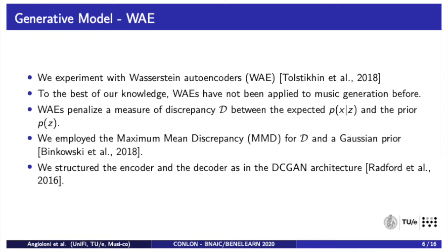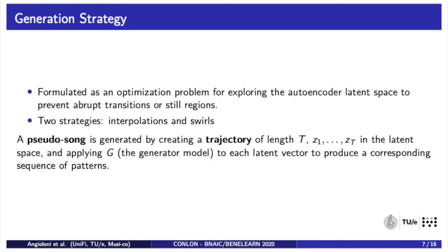Our generation strategy is formulated as an optimization problem for exploring the autoencoder latent space in a way that prevents abrupt transitions between consecutively generated patterns, as well as regions with little variation. A pseudo-song is generated by creating a trajectory of length T, consisting of Z1 to ZT in the latent space and applying G, the generator model, to each latent vector to produce a corresponding sequence of patterns. We defined two strategies: interpolation and swirling.